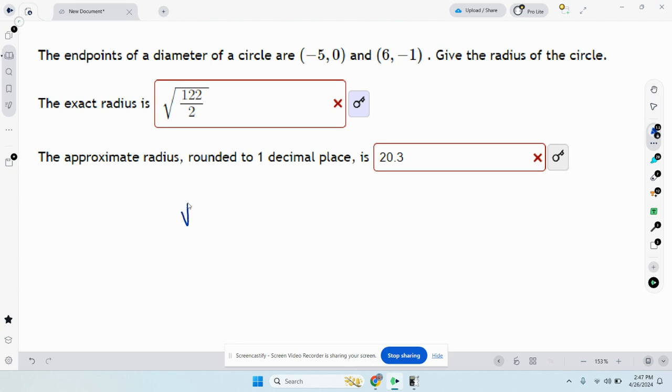So if we use the distance formula, this is going to be y2, which we'll call -1. This is y1, so this will be -1 minus 0 squared, plus x2 and x1. We'll call this 6 minus -5 squared.